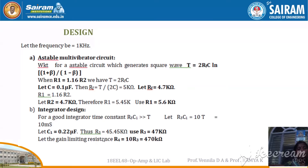Coming to the integrator design part: to design a good integrator, you have to choose the time constant R3 times C such that it is greater than T, the total time period of the triangular waveform. We take R3C equal to 10 times T. Choosing capacitance value 0.22 microfarad, we find R3 equals 47 kilo ohm. R4 is the gain limiting resistance and should be 10 times R3, so it will be 470 kilo ohm.